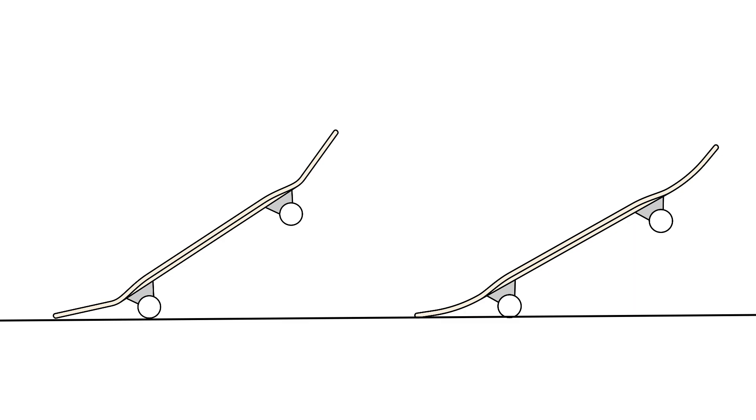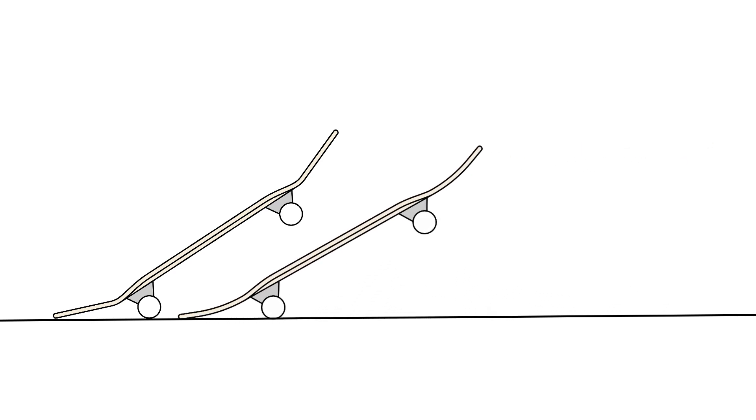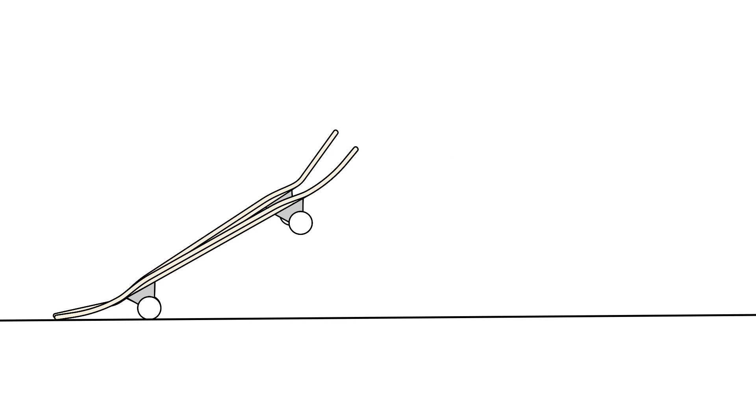A smaller angle and larger radius will make the board feel less steep and reduce the pop angle. A lower pop angle usually helps the board feel more responsive, as it will pop faster since it's closer to the ground.